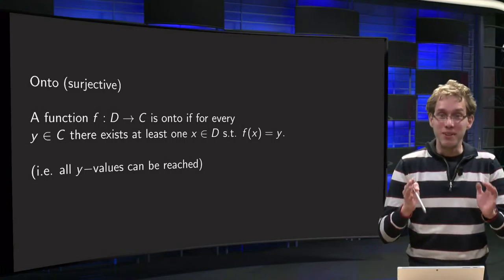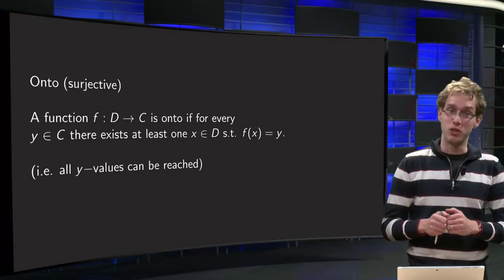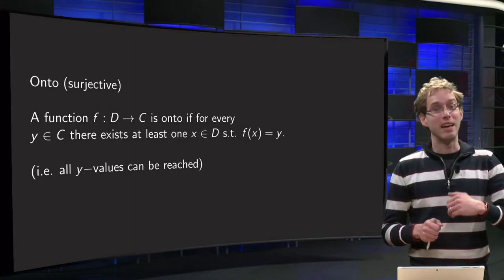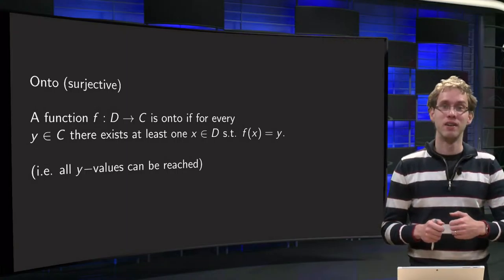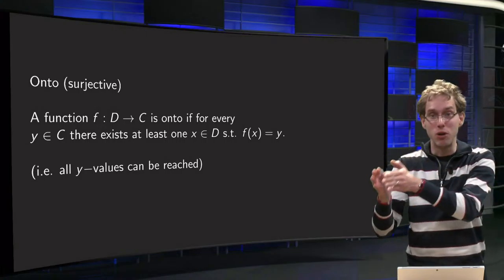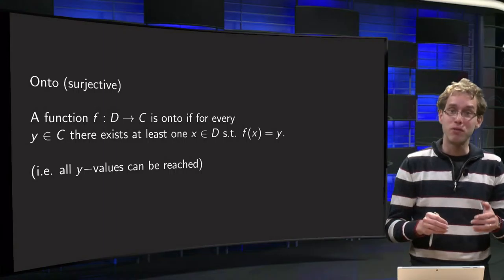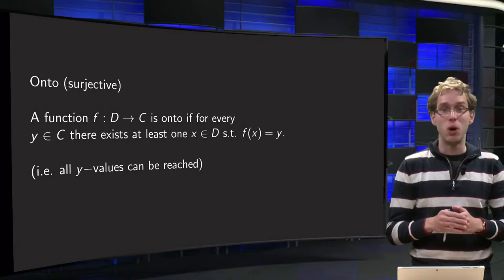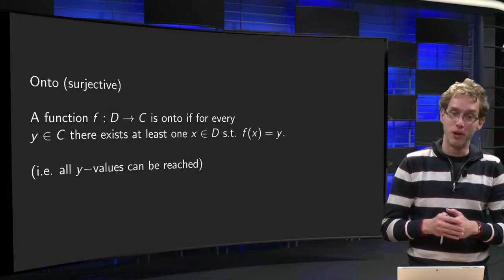Onto will tell us, together with one-to-one, which we will discuss in another video, whether we can invert a certain function. And if you see a function as a relation between sets, its domain and codomain, it is not difficult at all to see whether a function is onto or not, as you will learn in this video.